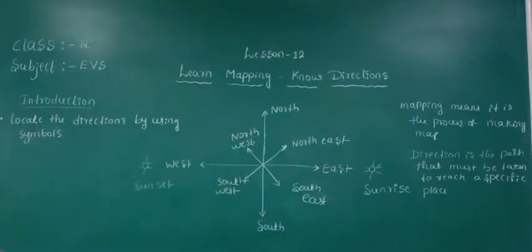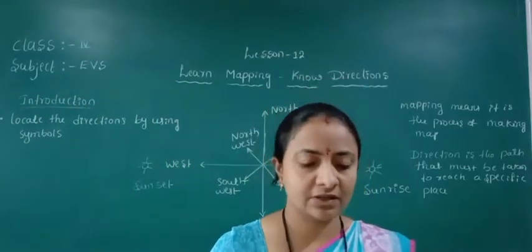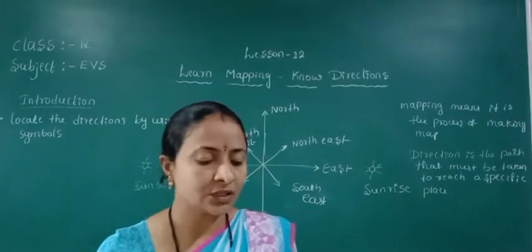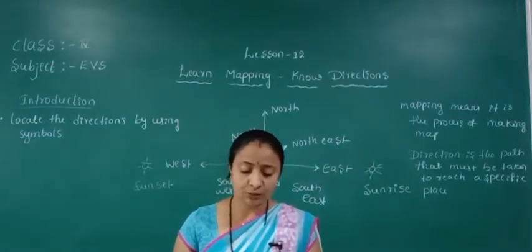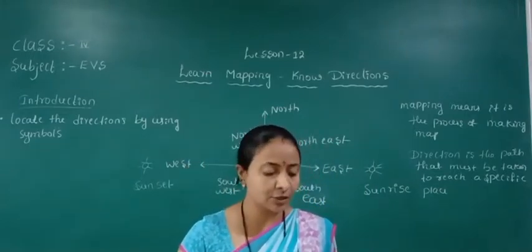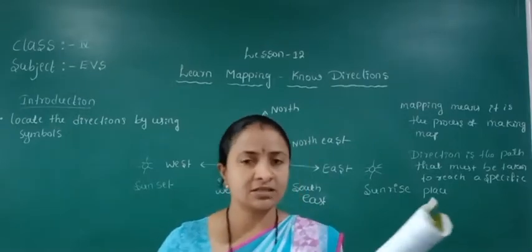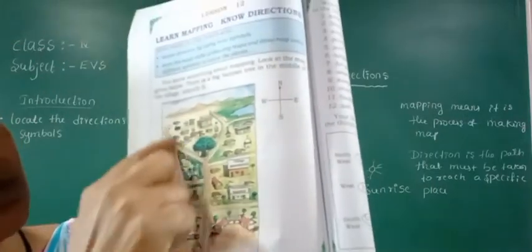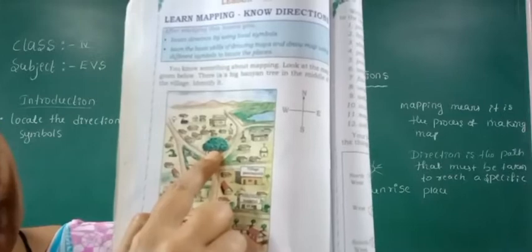Direction helps to locate places. Direction is a specific way we can go to get from one location to the next. Now we will learn about the directions in the textbook — there is a big banyan tree in the middle of the village, and we need to identify places around it.